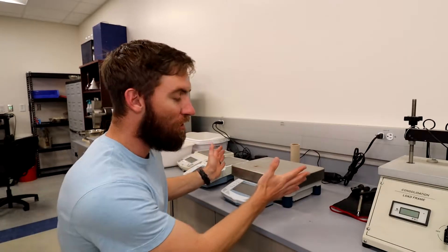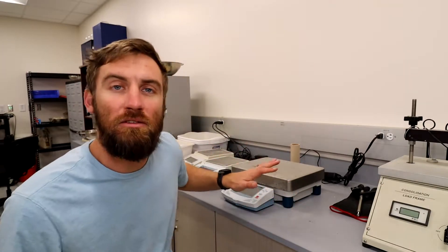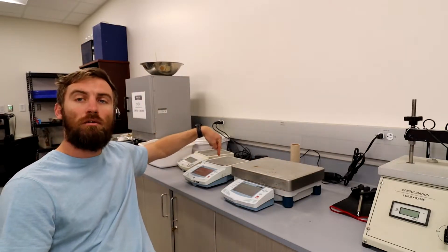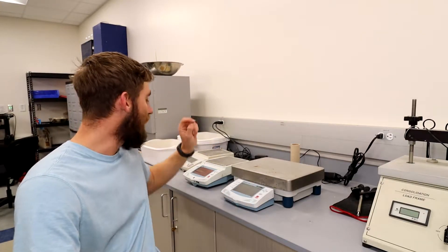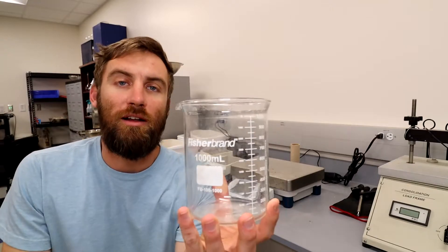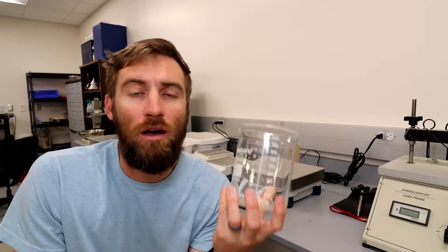The other thing that we need for this lab are two scales. We have a large capacity scale that's going to be used to measure the weight of our permeameter when it's empty and when it's full. And we also have this smaller precision scale at 0.01 gram that will measure the mass of the water we're collecting through the effluent. We'll take that mass and convert it to volume knowing the density of water, and that's how we're going to get the V in the constant head permeability equation.